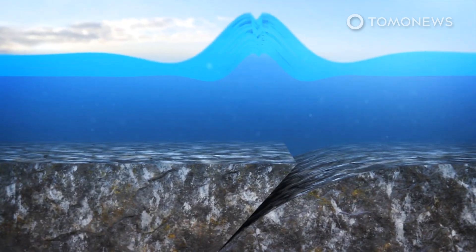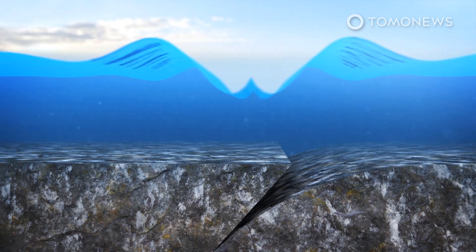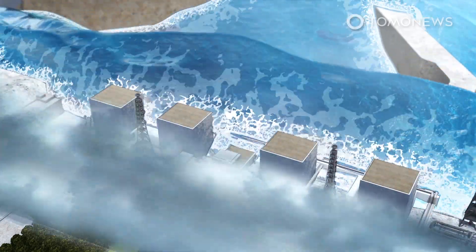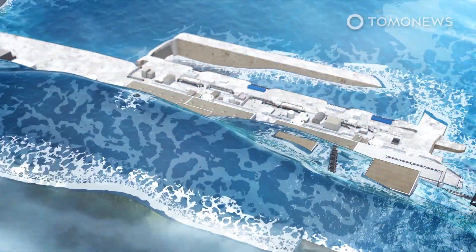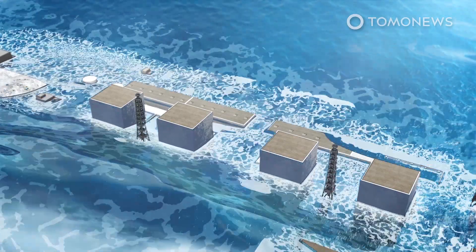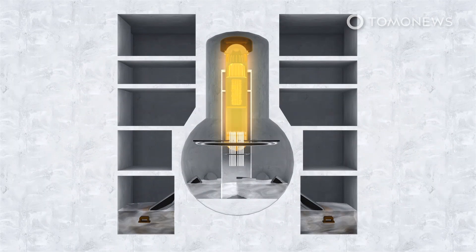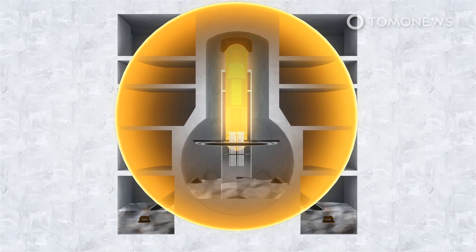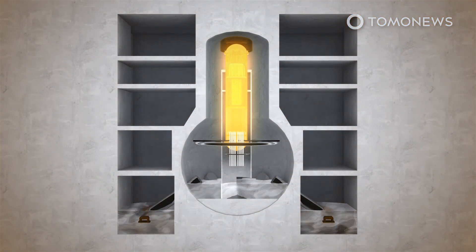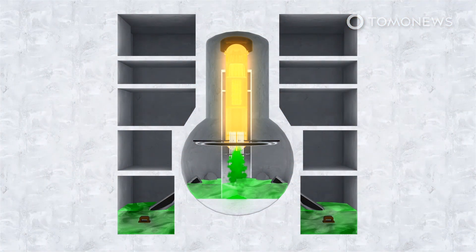Officials believe that the work could cost the government much more than $76 billion. This work would focus on removing nuclear fuel and about 900 tons of melted fuel debris, while also disposing of contaminated cooling water and dismantling the four reactors. Japan has already spent $295 billion on the region's recovery.